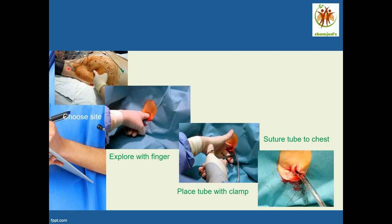For chest tube insertion, the surgeon will place the patient in a comfortable position with the hand behind the head on the affected side. The surgeon prepares the area with an antiseptic solution, explores the incision with a finger, places the tube with a clamp, and then sutures the tube to the chest wall.